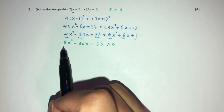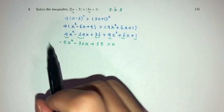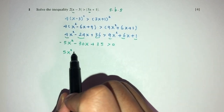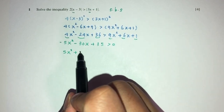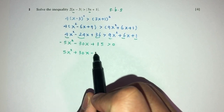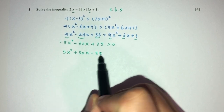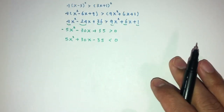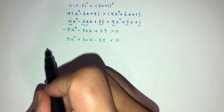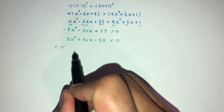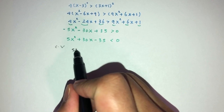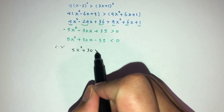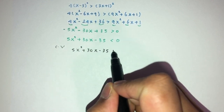Since we don't like working with negative values, we switch sides, giving us 5x squared plus 30x minus 35, less than zero. Now we need to find the critical values of x, so we take the same expression and equate it to zero.